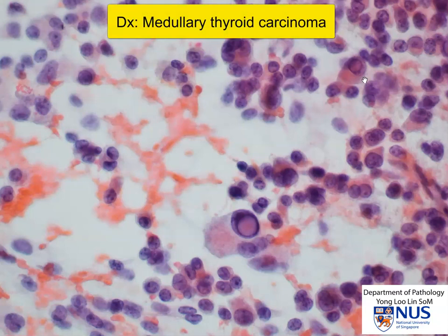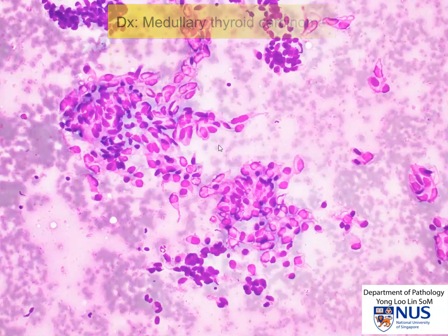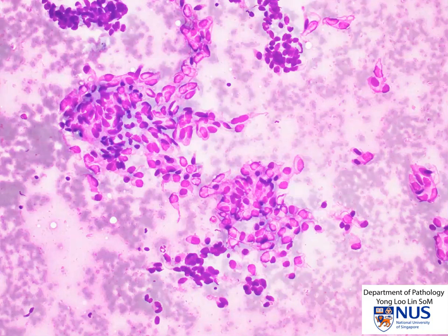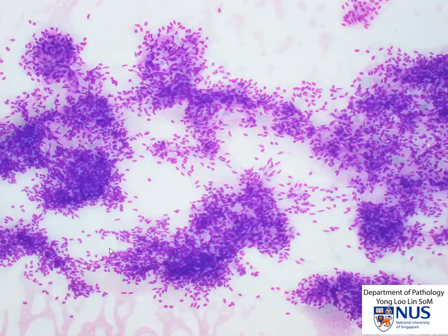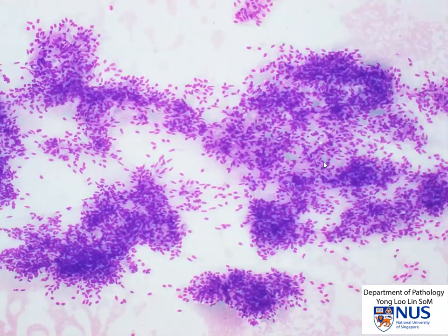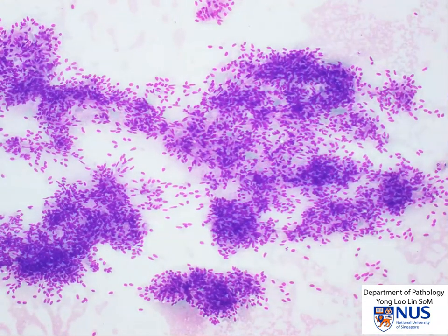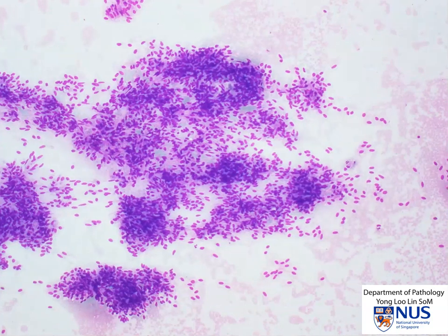Medullary thyroid carcinoma, in addition to epithelioid features, can also have a spindle cell appearance. Here is one such example — we can see that the nuclei are elongated and some of the cells have these tapering cytoplasmic processes. Here is another example of a medullary thyroid carcinoma with spindle cell morphology, and not infrequently we can sometimes see a mixed pattern of spindle cell as well as epithelioid cells.